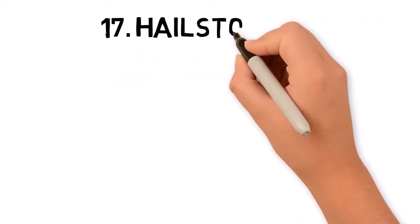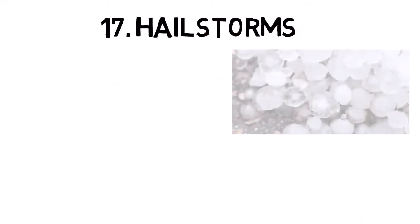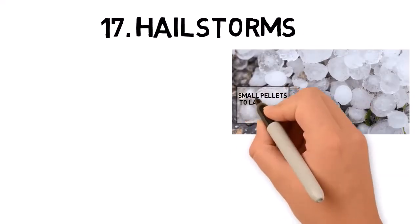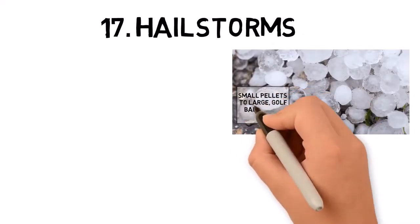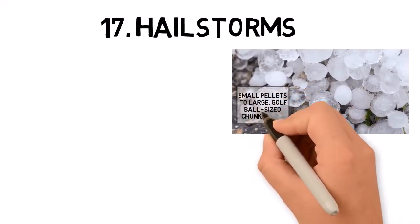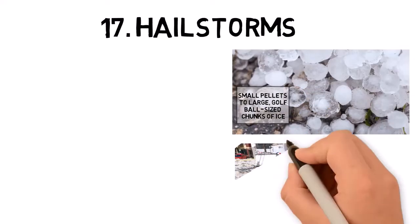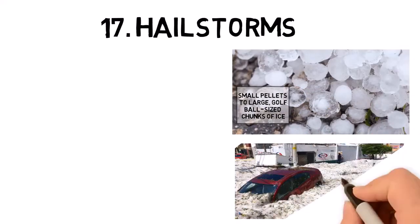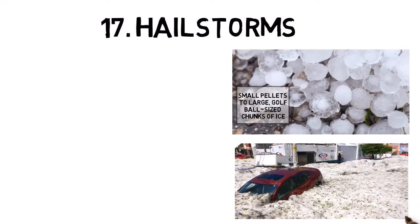Hailstorms involve the formation of hailstones, which are balls of ice that fall from thunderstorms. Hailstones can range in size from small pellets to large, golf-ball-sized chunks of ice. Hailstorms can cause significant damage to crops, vehicles, roofs, and windows.